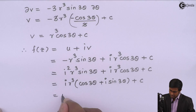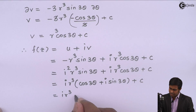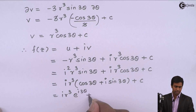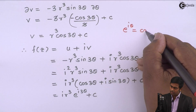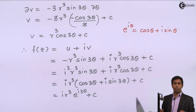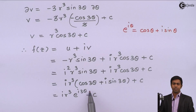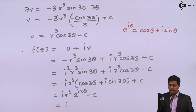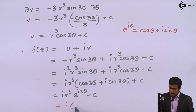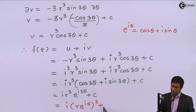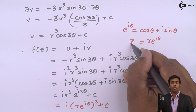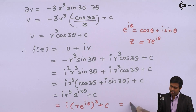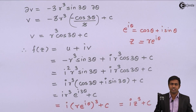We know that cos(3θ) + i sin(3θ) = e^(i·3θ), using Euler's formula e^(iθ) = cos θ + i sin θ. Since the angle is 3θ, we have e^(i·3θ). Taking the cube common: i · (Re^(iθ))³ + C. Since Re^(iθ) is the exponential form of the complex number Z, this equals iZ³ + C. This is the analytic function F(z). Thank you.